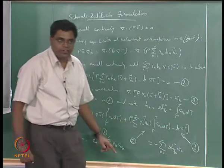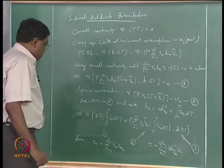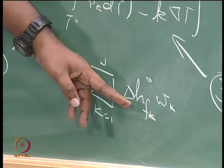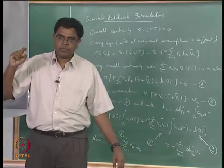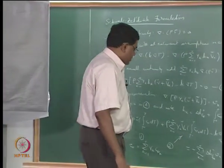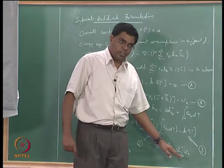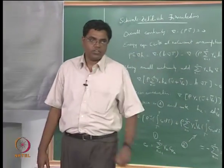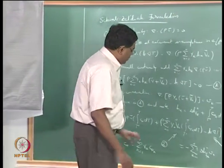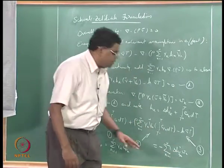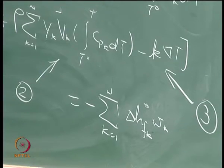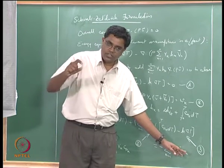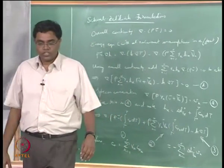The chemical heat release rate term has now been explicitly identified. We should think about what Δh°_{fk} means — it is the standard heat of formation of species k in joules per kilogram of species k — and w_k is the net rate of production or consumption of species k in kg/(m³·s). Summing this product over all species gives the net heat release from the chemical reaction. This is computed per species and then summed across all species.